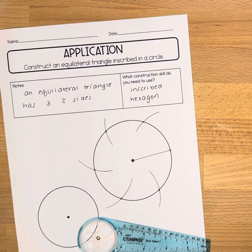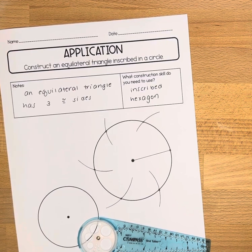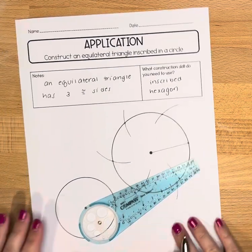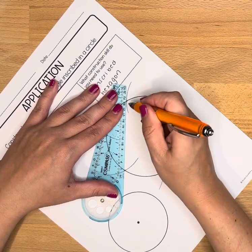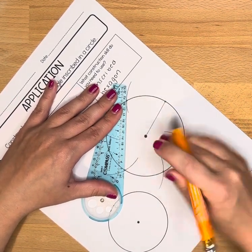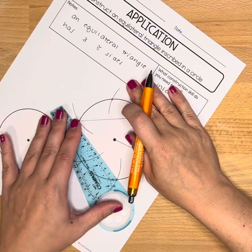Once you have six points, you're going to pick three of them. A triangle has three sides whereas a hexagon has six. So you're going to pick any three that alternate and you are going to use a straight edge and connect them.